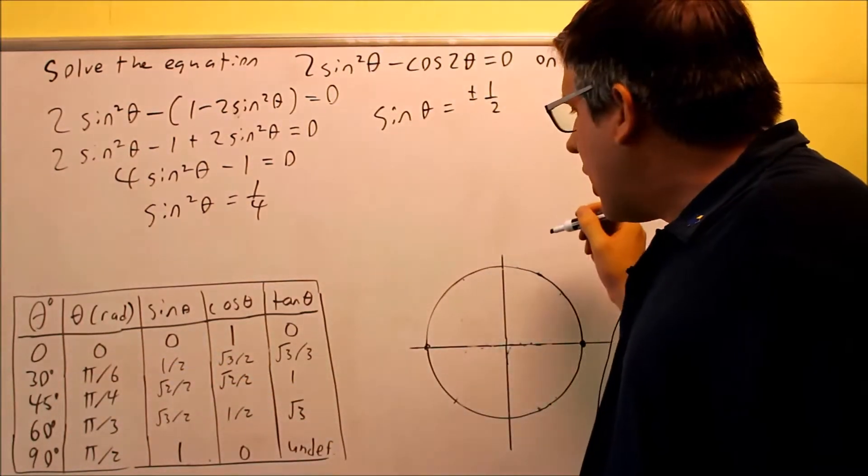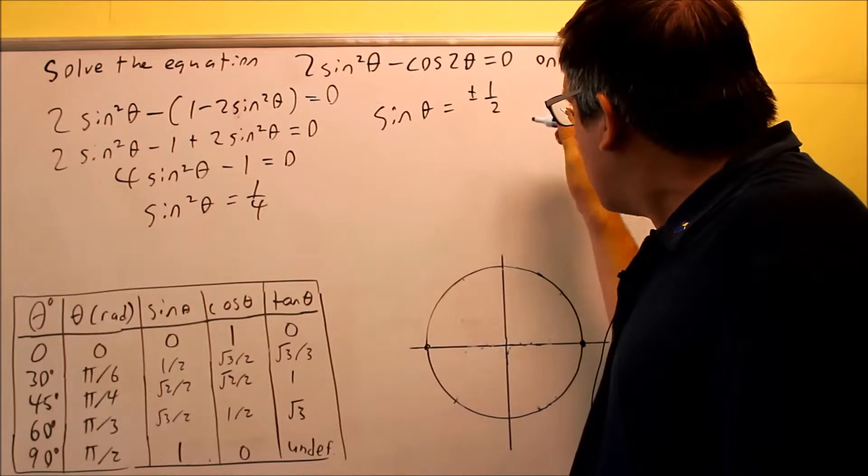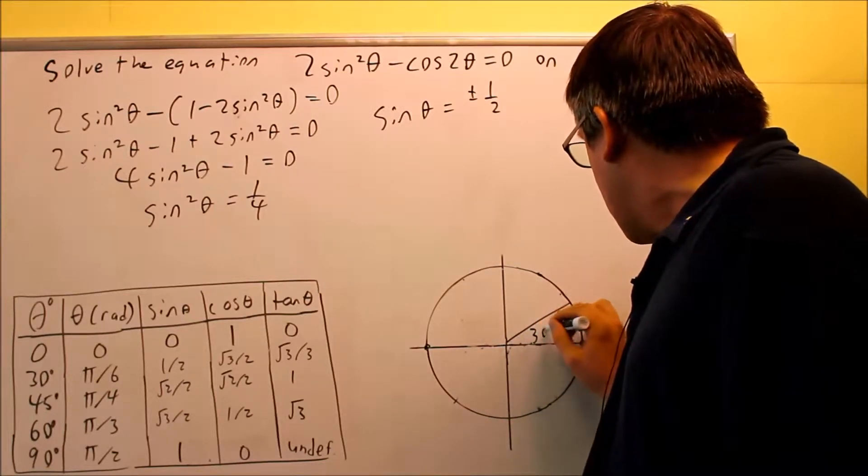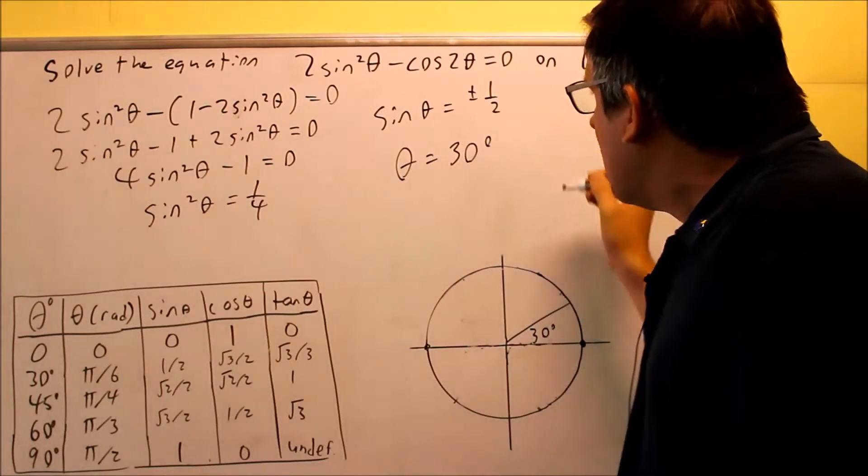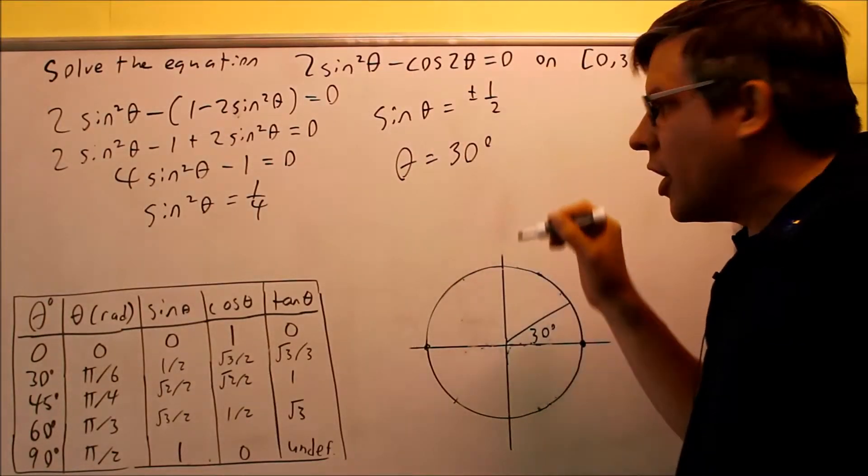I know that one of my angles is going to be 30, so I can draw in 30 degrees. That's going to be one of my answers. Theta equals 30 degrees first. That answer is the first part.